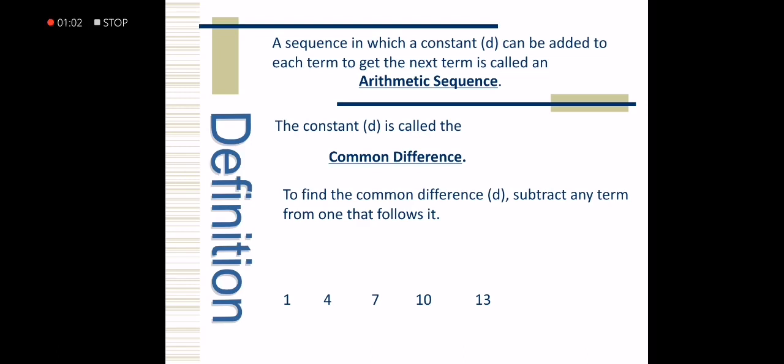The first thing we need to do is identify the terms of the given sequence: first term, second term, third term, and so on. The first term is 1, the second term is 4, the third term is 7, the fourth term is 10, and the fifth term is 13.